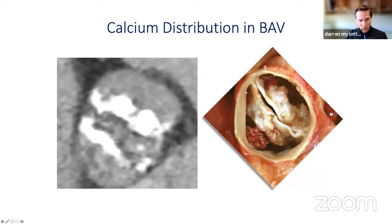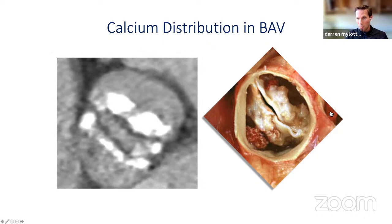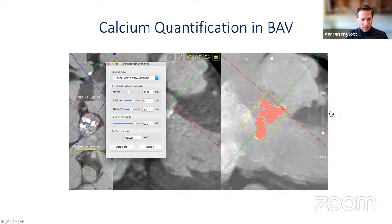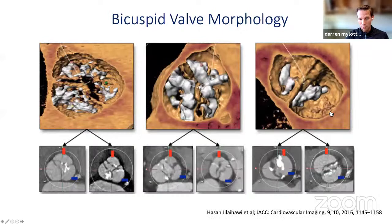Here's a typical case with very severe leaflet calcification. As we drop down the leaflet, you'll see a big chunk of calcium coming from both sides. If a balloon expandable valve impacts this calcium, it's just going to push it to the side, and a self-expanding valve may not be able to open this kind of disease. Not only is it the location of the calcium, but also the distribution — we very often see very high calcium volumes in patients with bicuspid aortic valve morphology, and notably these calcium volumes are higher in younger patients with severe AS compared to older patients.